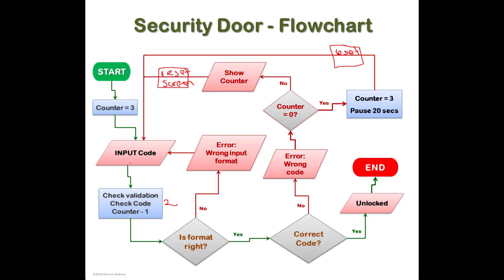The counter is set to three — those are the number of chances you have. 'Input code' is an input/output instruction, expecting you to enter the code. Then check for validation: if the format is right and the code is right, it proceeds. If the code is not right, it shows an error message, then checks if the counter equals zero. If not, the counter decrements — now you have two chances — it resets the screen and asks you to enter the code again.